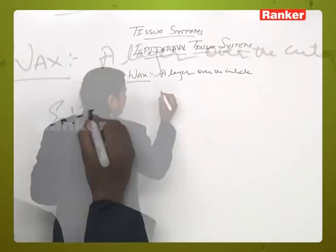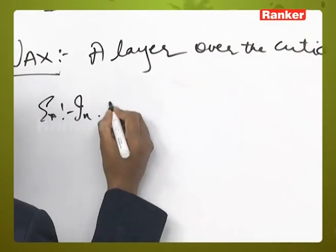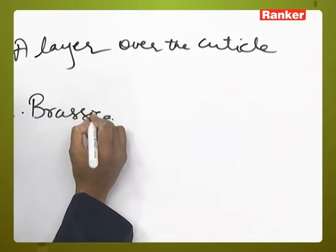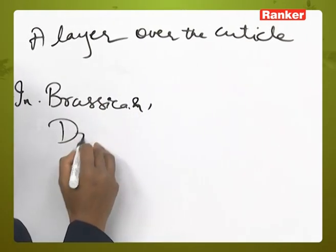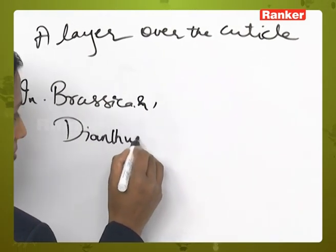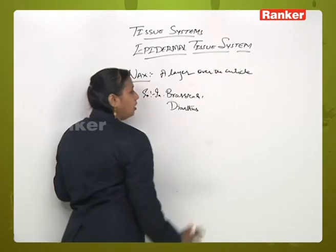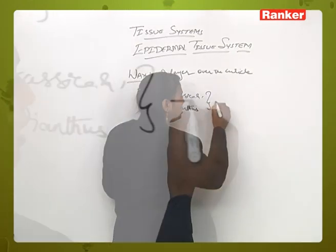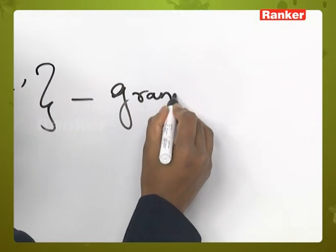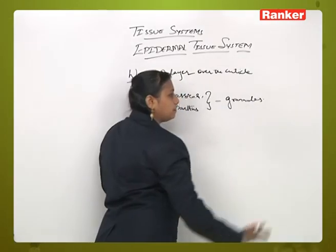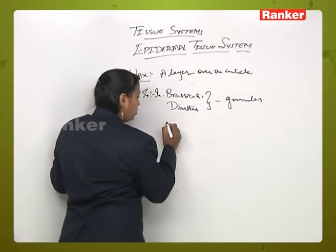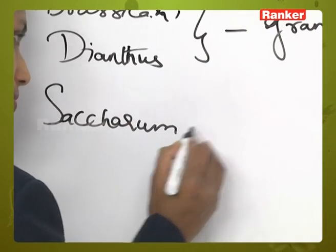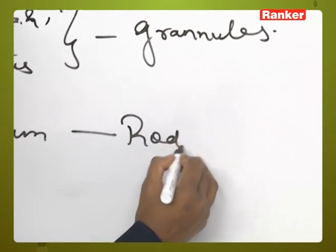In brassica and dianthus, you will see the occurrence of the wax layer in the form of granules. And in the case of saccharum, it is in the form of rod shape.